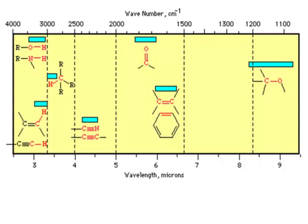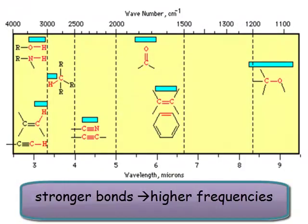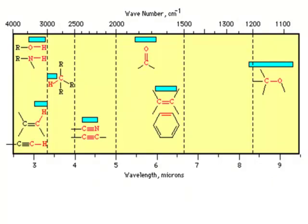There are other very characteristic vibrations. C triple bond N and C triple bond C both absorb around about the 2000 and a few hundred wave number region of the spectrum. That's because they're strong bonds. They're triple bonds, so they're going to have very high frequencies. It turns out that the C triple bond N is a very intense absorption. The C triple bond C is actually a very weak absorption. That's associated with the size of the dipole moment change.